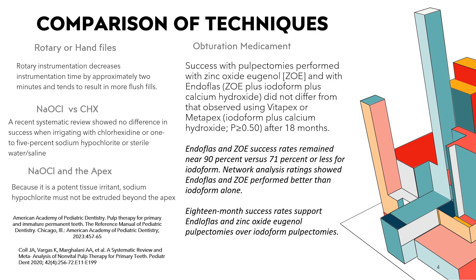When looking at obturation medicaments, success with pulpectomies performed with zinc oxide eugenol and with Endofloss — which is zinc oxide eugenol plus iodoform plus calcium hydroxide — did not differ from that observed using Vitapex or Metapex. Endofloss and ZOE success rates did remain near 90% versus 71% or less for iodoform, so network analysis ratings showed that Endofloss and ZOE performed better than iodoform alone. At the end of this larger study, 18-month success rates supported Endofloss and zinc oxide eugenol pulpectomies over iodoform pulpectomies, though all three potential medicaments can still be successful.